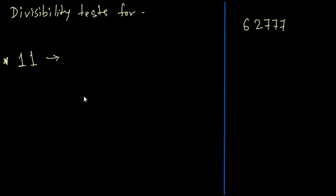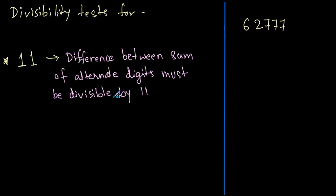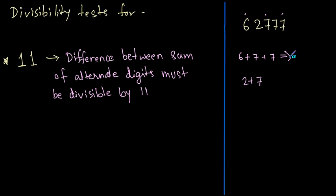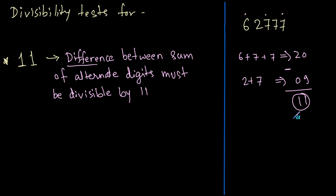Let's look at the divisibility rule for 11. The difference between the sum of alternate digits must be divisible by 11. Taking the example, we mark alternate digits: 6, 7, and 7 form one group, and 2 and 7 form another. So 6+7+7 = 20 and 2+7 = 9. The difference is 20 minus 9 = 11. Since 11 is divisible by 11, the number is divisible by 11.